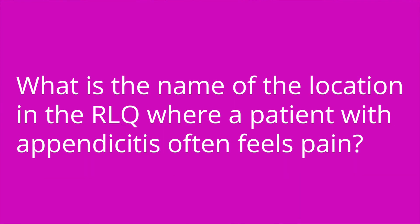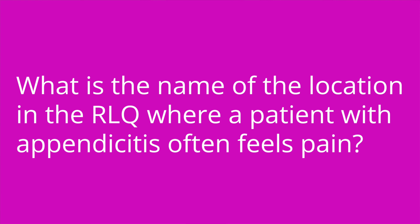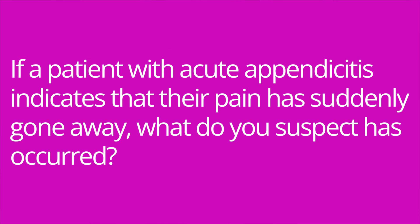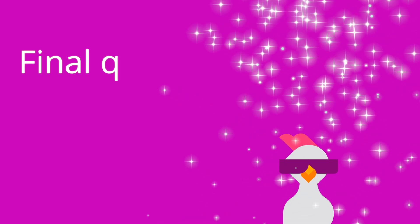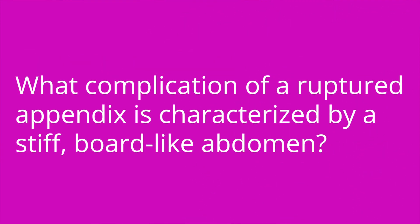It's quiz time, and these are things you definitely have to know in nursing school and for your exams. Question number one: what is the name of the location in the right lower quadrant where a patient with appendicitis often feels pain? The answer is McBurney's point. Question number two: if a patient with acute appendicitis indicates their pain has suddenly gone away, what do you suspect has occurred? The answer is you suspect their appendix has ruptured. Question number three: what complication of a ruptured appendix is characterized by a stiff, board-like abdomen? The answer is peritonitis.